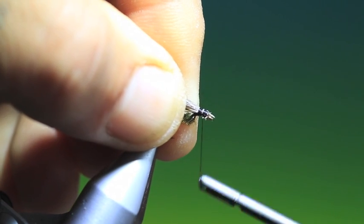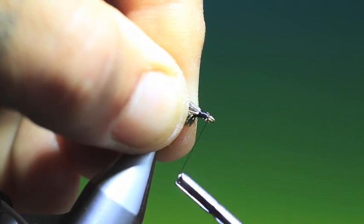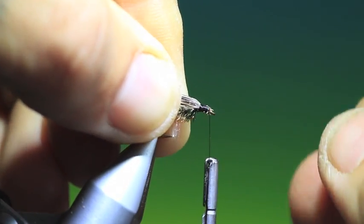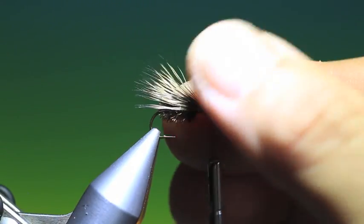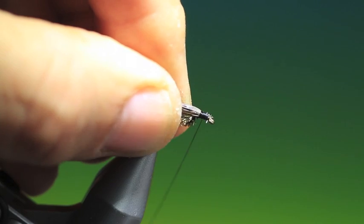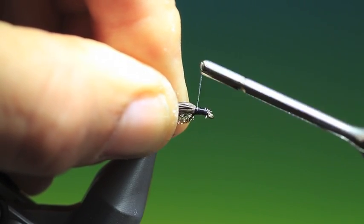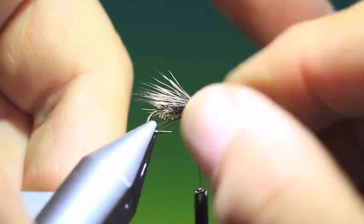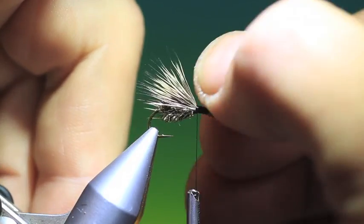And then as you go forward you can tighten up a wee bit. And then you should have the correct wing position over your peacock herl body. So we can go up now getting ready for the hackles. Good.